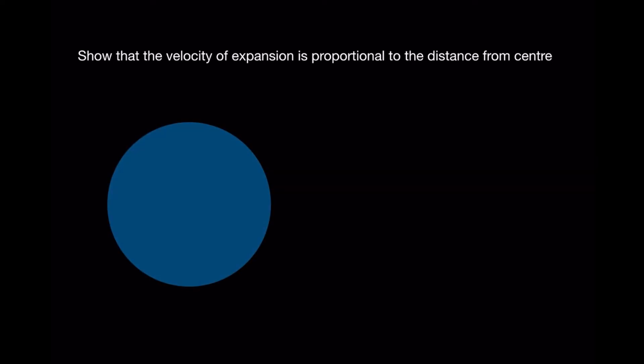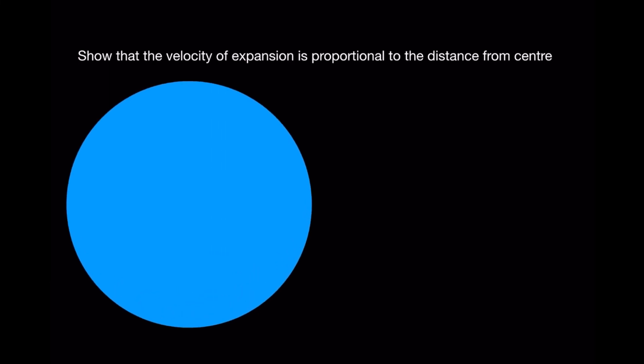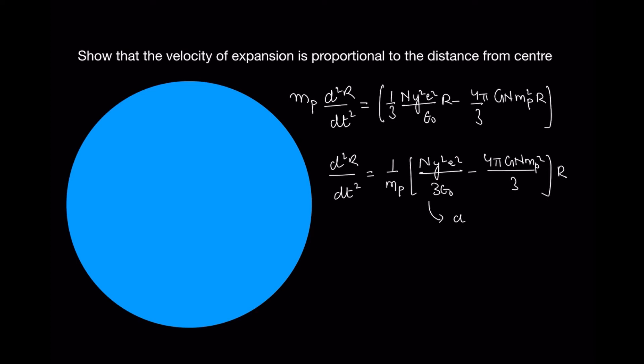Now I want to show that the velocity of expansion is proportional to the distance from the center. As the universe expands, the more it expands the faster it expands. mp·d²r/dt² equals this force. This expression in brackets is the net force when the universe is expanding. On the left side I have Newton's second law in differential form. So d²r/dt² = 1/mp times the expression. Let's put 1/mp and the rest of the expression as α.